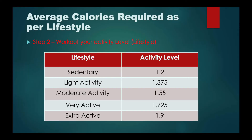The second step is to find out your activity level as per your lifestyle. For a sedentary lifestyle with little or no activity per week, the activity level is 1.2. For light activity, meaning light exercise 1 to 3 days per week, it is 1.375. For moderate activity — moderate exercise 3 to 5 times per week — it is 1.55. For a very active lifestyle with hard exercise 6 to 7 days a week, it is 1.725. For extra active individuals doing very hard physical work like farming or mining 6 to 7 days per week, the activity level is 1.9.